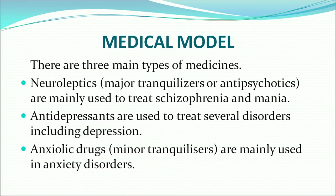The most common and effective somatic therapy in the medical model is chemotherapy, which involves giving medicines to persons with disorders. There are three main types: neuroleptics — also called major tranquilizers or anti-psychotic drugs — used to treat schizophrenics and manics; anti-depressants, used to treat depression and related disorders; and anxiolytic drugs — minor tranquilizers — used to treat anxiety disorders.